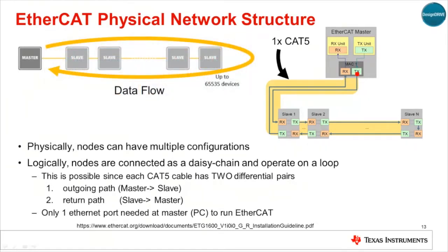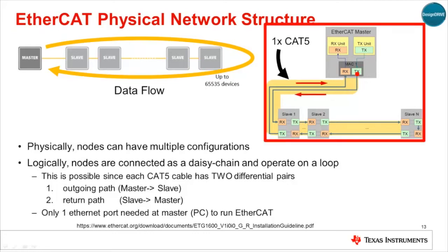Logically, all the slaves are daisy-chained together and operate on a single loop. The diagram on the right highlights the two differential pairs present in a CAT5 Ethernet cable, which allows for both outgoing and incoming paths from the master's perspective within the same cable. This means a PC operating as the EtherCAT master needs only one Ethernet port to address up to 64,000 nodes.